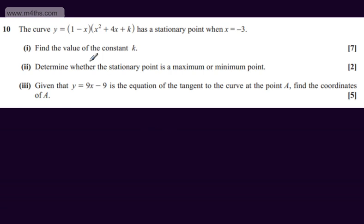This is question number 10. We're told the curve y equals 1 minus x multiplied by x squared plus 4x plus k has a stationary point when x equals minus 3. In the first part of the question, for 7 marks, we need to find the value of the constant k.